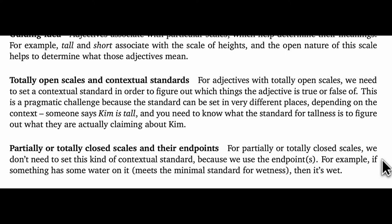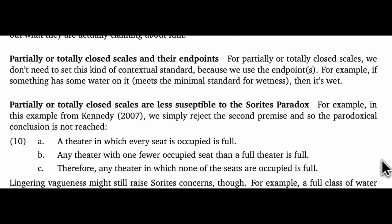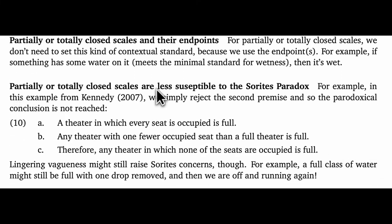For example, we reviewed the sorites paradox in the last screencast. And we can now see that we ran those arguments using adjectives with totally open scales. And this is, in fact, key to reliably generating the paradox. Consider, for a contrast, this case involving the adjective full. We start with the premise, a theater in which every seat is occupied is full. It seems entirely reasonable. And then we try to move to our recursive step. Any theater with one fewer occupied seat than a full theater is full. However, that seems false even for a single step. So we don't get going with the paradox at all. And we never, of course, reach any paradoxical conclusion.